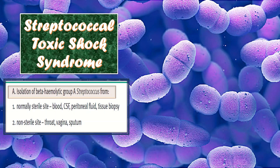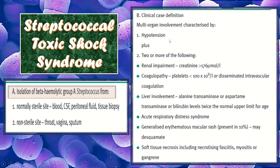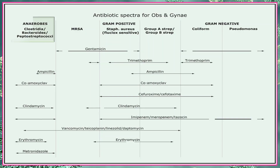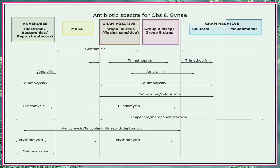Streptococcal toxic shock syndrome is defined by isolation of beta-hemolytic group A streptococcus from a sterile site (blood, CSF, peritoneal fluid, tissue biopsy) or non-sterile site (throat, vagina, sputum). Clinical case definition requires multi-organ involvement characterized by hypotension plus two of the following: renal impairment, coagulopathy, liver involvement, acute respiratory distress syndrome, generalized erythematous macular rash, or soft tissue necrosis. The antibiotic spectra table for obstetrics and gynecology shows that anaerobes such as Clostridium, Bacteroides, and Peptostreptococcus are covered by ampicillin, co-amoxiclav, clindamycin, vancomycin, and metronidazole, and the table also shows antibiotics covering MRSA, gram-positive bacteria, group A streptococcus, gram-negative coliforms, and Pseudomonas.